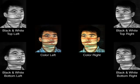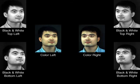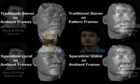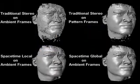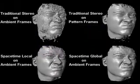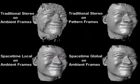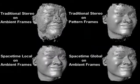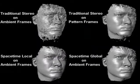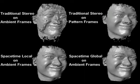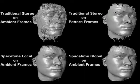We seek to reconstruct the shape of these ambient frames where the color texture is best. Given the black and white stereo pairs, we can reconstruct the shape of the face over time. Here we compare four stereo reconstruction methods. On the upper left, we apply traditional stereo to each ambient frame independently. The lack of detailed texture results in a very noisy reconstruction.